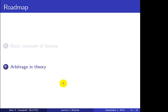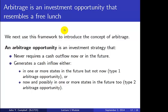So that's a brief introduction to some basic concepts of finance: discrete state representation of uncertainty, Arrow-Debreu securities, and complete markets. We now go on to discuss arbitrage in theory. What is an arbitrage opportunity?